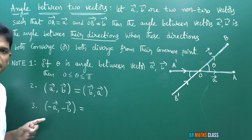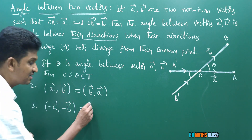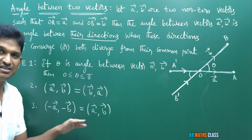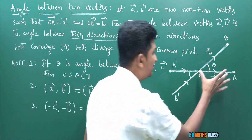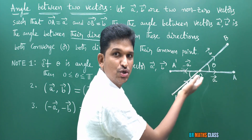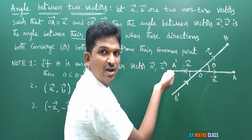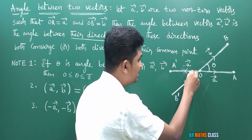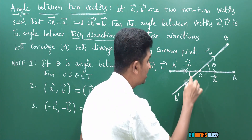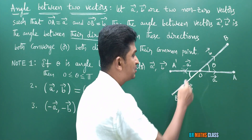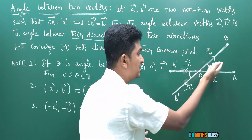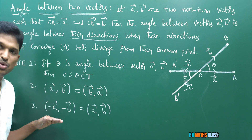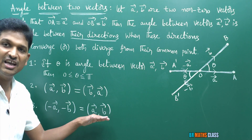Third note point: the angle between minus a-bar, minus b-bar is the same as the angle between a-bar, b-bar. This tells you that vertically opposite angles are equal. Minus a-bar means the same magnitude but opposite direction. Similarly, minus b-bar is OB-bar with opposite direction. The angle between minus a-bar and minus b-bar is the same as the angle between a-bar and b-bar — these are vertically opposite angles.